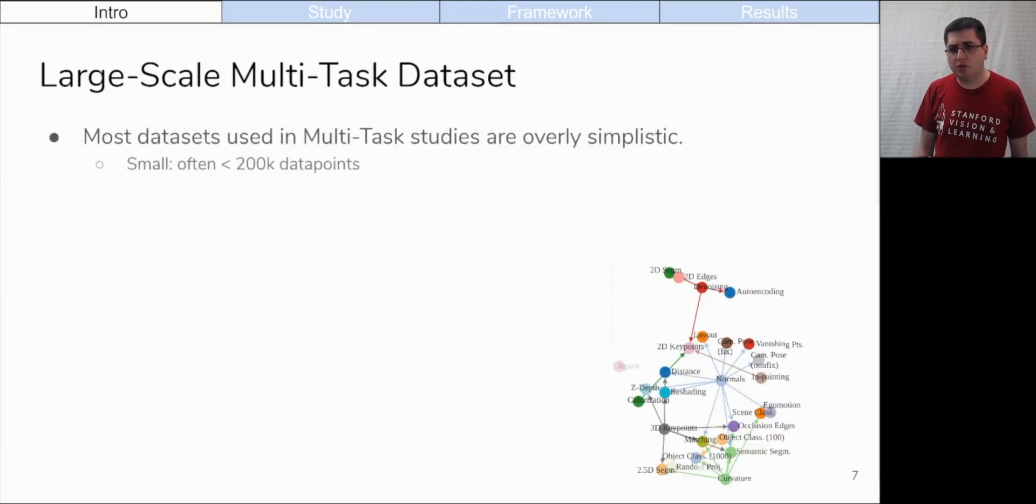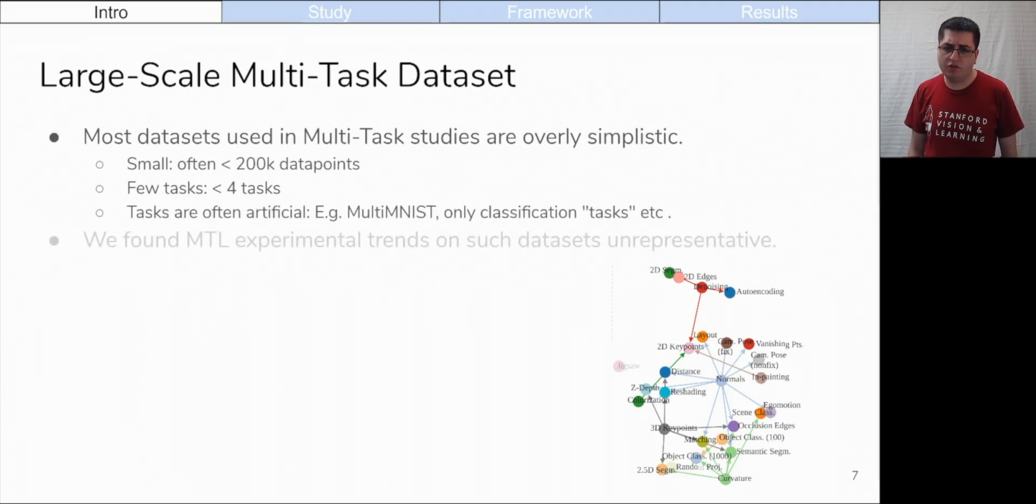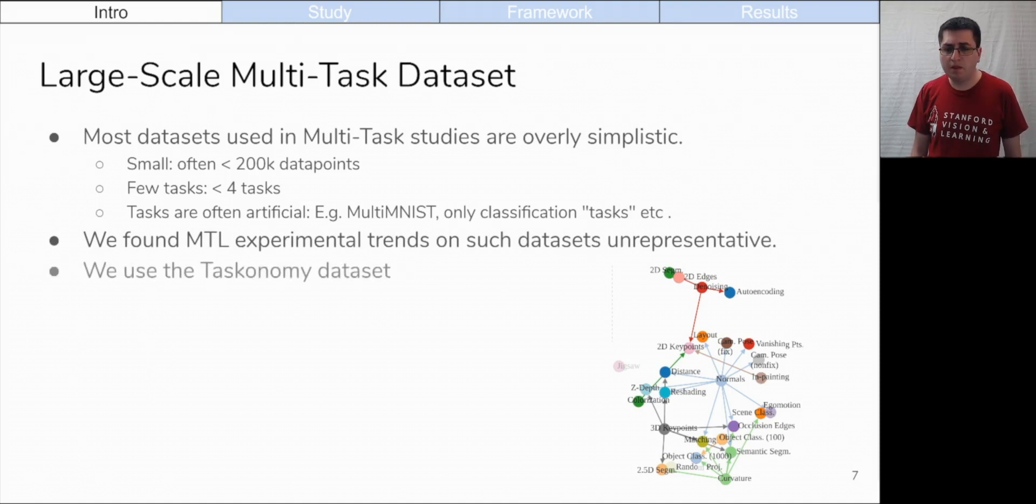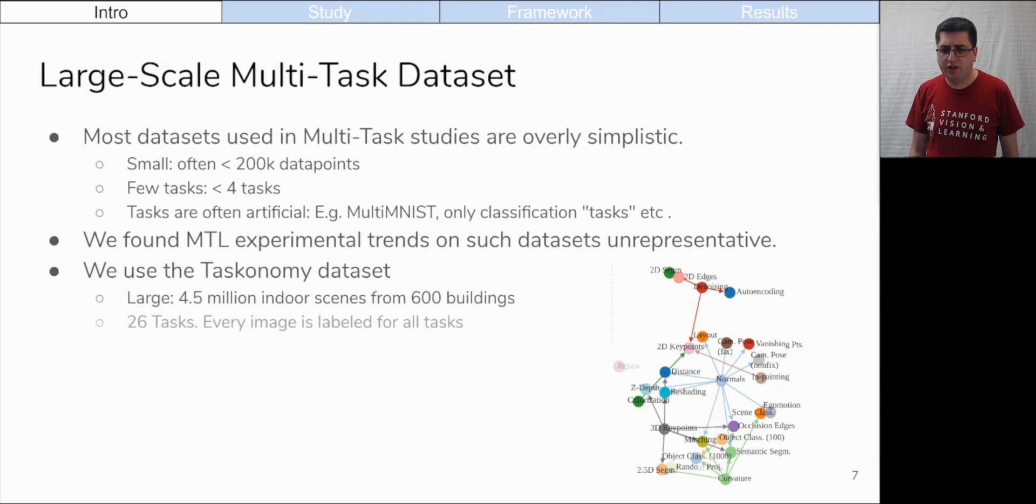Most data sets for multi-task learning are small, having fewer than 200,000 instances and fewer than four tasks. Furthermore, those tasks are often artificial. We found that the multi-task learning trends on such data sets were unrepresentative. Instead, we use the Tasconomy data set. This data set is large, four and a half million instances. Each instance is labeled for a diverse set of 26 tasks, including 2D, 3D, and semantic tasks.